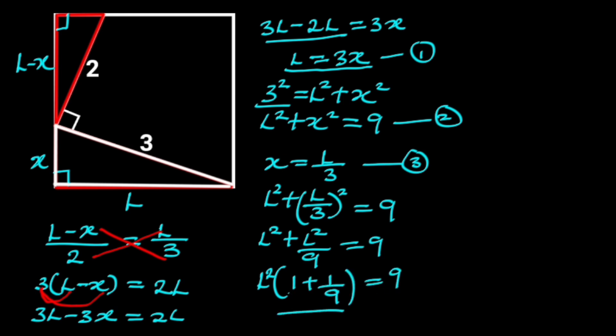Let's add this together. The common denominator is 9. 1 into 9 is 9, and 9 times 1 is 9. 9 into 9 is 1, and 1 times 1 is 1. 9 plus 1 is 10, and this will give us 10 over 9. So we have L squared times 10 over 9 is equal to 9.